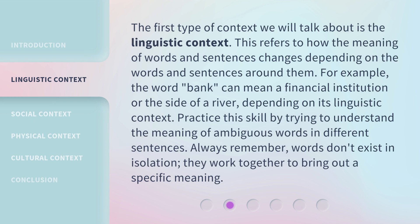The first type of context we will talk about is the linguistic context. This refers to how the meaning of words and sentences changes depending on the words and sentences around them. For example, the word 'bank' can mean a financial institution or the side of a river, depending on its linguistic context.